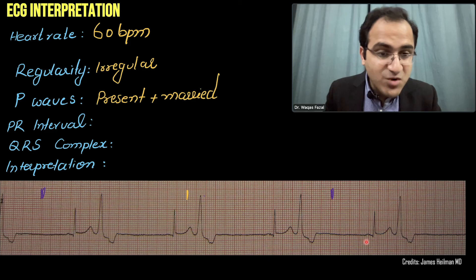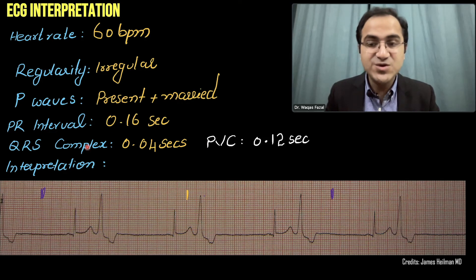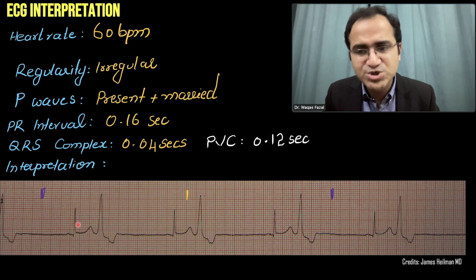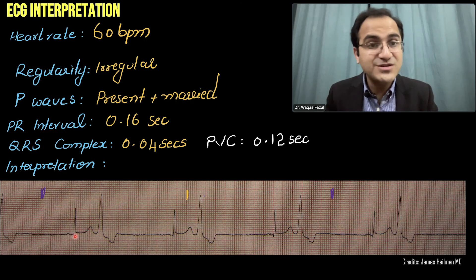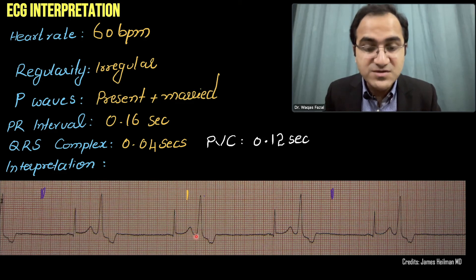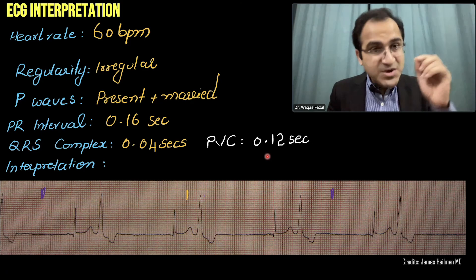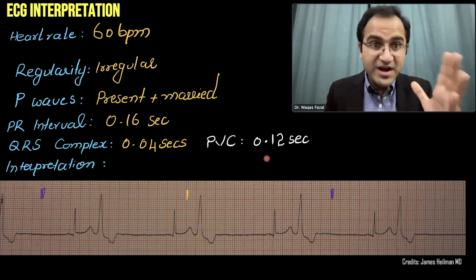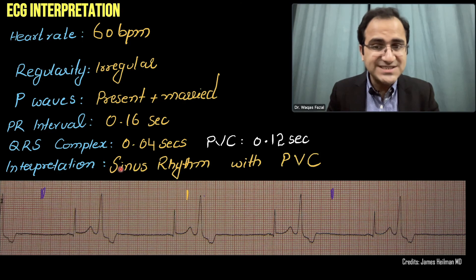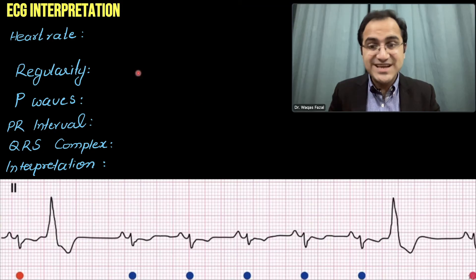QRS complexes are narrow with sharp steep points — one large box wide, approximately 0.04 seconds, which is normal. But alongside these normal QRS complexes, there are also PVCs: abnormal bizarre wide QRS complexes measuring more than three small boxes — approximately 0.12 seconds. Three or more small boxes constitutes a wide QRS complex. The interpretation of this ECG is sinus rhythm with premature ventricular contraction.